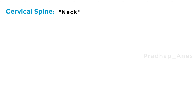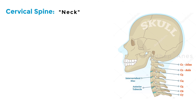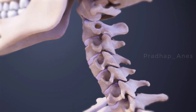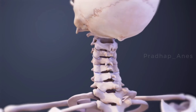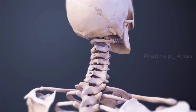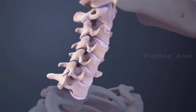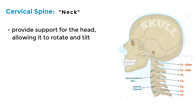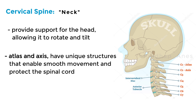The cervical spine, or neck. The cervical spine consists of seven vertebrae located in the neck region. These vertebrae provide support for the head, allowing it to rotate and tilt. The first two vertebrae, called the atlas and axis, have unique structures that enable smooth movement and protect the spinal cord.